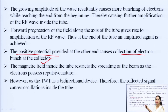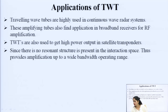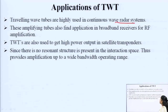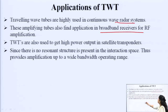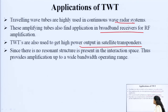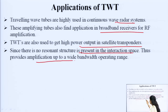The growing amplitude of the wave causes more bunching of electrons while reaching the end, thereby causing further amplification of the RF wave inside the tube. Forward progression of the field along the axis of the tube gives rise to amplification of the RF signal. TWT tubes are highly used in continuous wave radar systems. These amplifier tubes also find application in broadband receivers for RF amplification. TWTs also provide high power output in satellite transponders. Since there are no resonant structures present in the interaction space, they provide amplification over a wide bandwidth operating range.